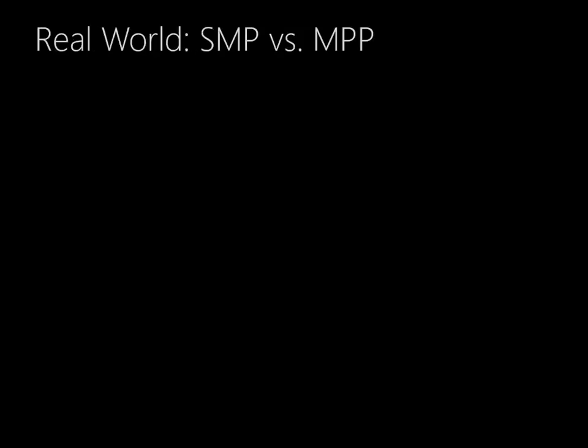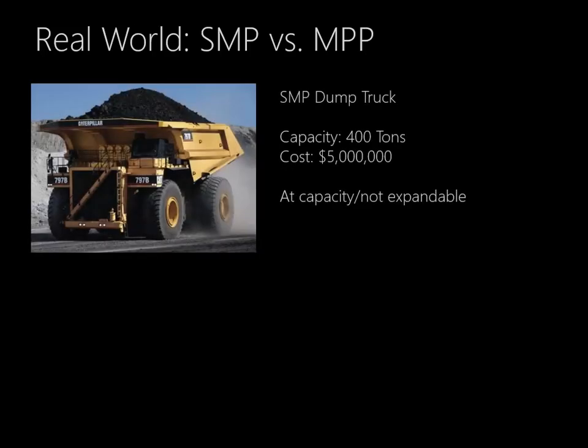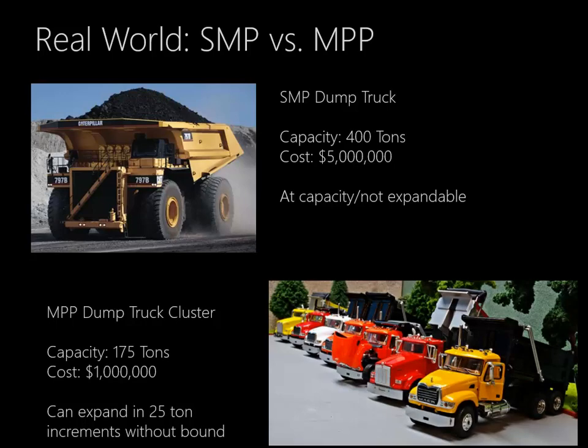Let's compare SMP and MPP in a more real-world context. This is an SMP dump truck. If I wanted to move 400 tons of coal, I could buy this dump truck and it would do it — this is the kind of truck used at very large mining operations. The approximate cost of this dump truck is $5 million, and it's at capacity. I can't expand it at all. If I want to move more, I have to buy another one at $5 million. Very expensive.